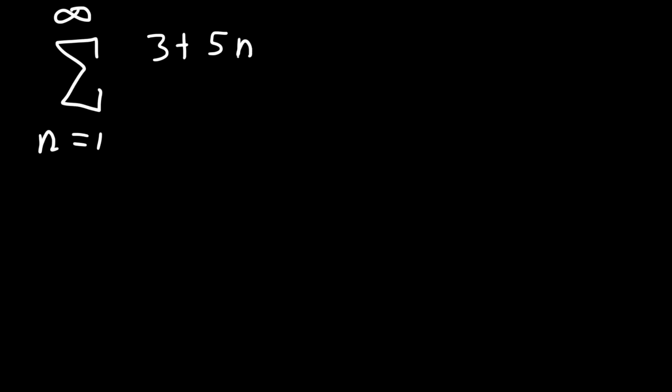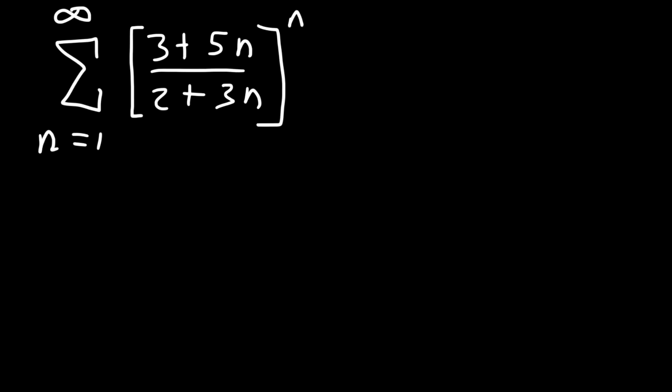Now let's move on to our second example. Let's say we have 3 plus 5n divided by 2 plus 3n, all raised to the nth power. Use the root test to determine if the series is going to converge, diverge, or if it's inconclusive. We take the limit as n goes to infinity of the absolute value of a sub n raised to the 1 over n.